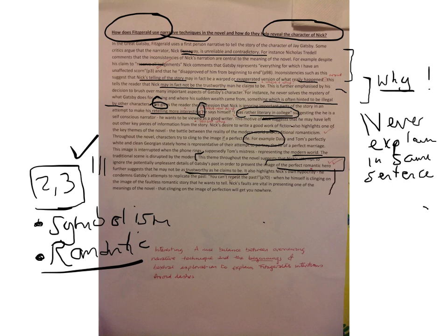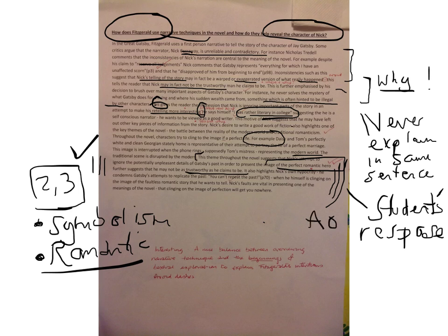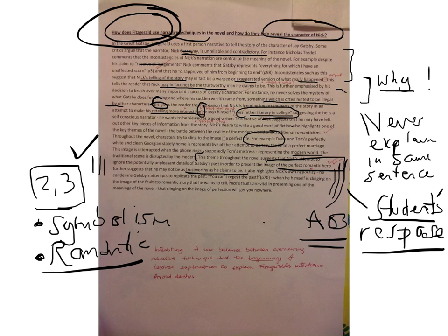The last part of this is the student's own response — what do they think? This is a really important part of AO3: not just referring to another critic, but giving your response to what you think is going on, and your response to what you think Fitzgerald is saying in this particular piece of work. I hope you found this helpful.